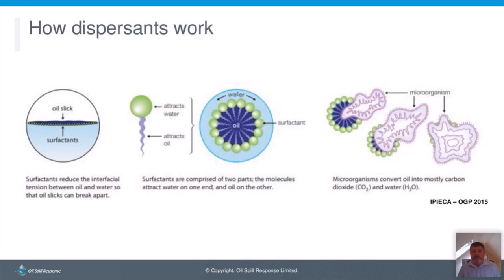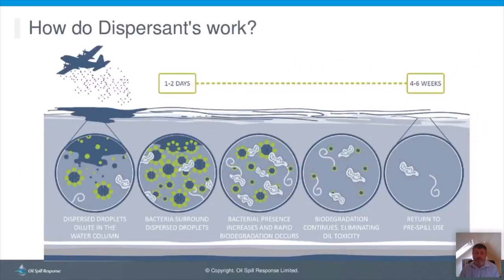Dispersion is a natural process, though the level of natural dispersion varies greatly depending on oil type and environmental conditions such as sea temperature and wave action. The purpose of chemical dispersion is to enhance that process and get the oil into small droplets in the water column. Once diluted, the droplets can be consumed by microorganisms that convert the oil into carbon and water. Dispersants are not always suitable for a response strategy — a robust decision-making process, often documented in contingency plans, must be followed at the strategy planning stage to guide the incident management team toward a suitable response.